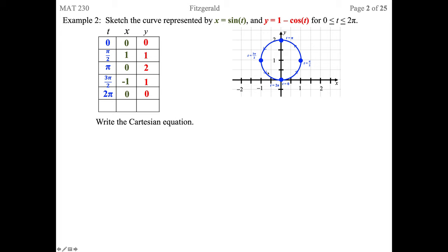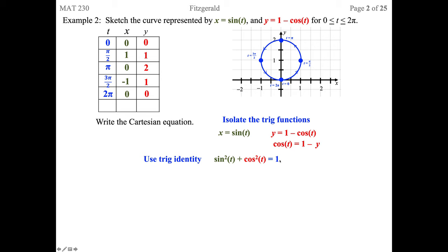If we want to write this as a Cartesian equation, isolate the trig functions. x equals sine of t is already isolated. We get cosine of t by itself: cosine t equals 1 minus y. Since this is a circle and we have the Pythagorean identity sine²t plus cosine²t equals 1, we replace sine t with x — giving x squared — and replace cosine t with (1 minus y), giving x² plus (1-y)² equals 1. That's our Cartesian equation.